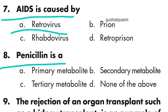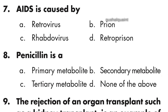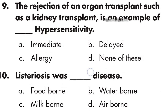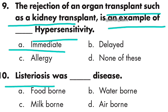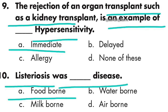Question 8: Penicillin is a secondary metabolite. Option B is right. Question 9: The rejection of an organ transplant such as kidney transplant is an example of immediate hypersensitivity. Option A is right. Question 10: Listeriosis is a foodborne disease.